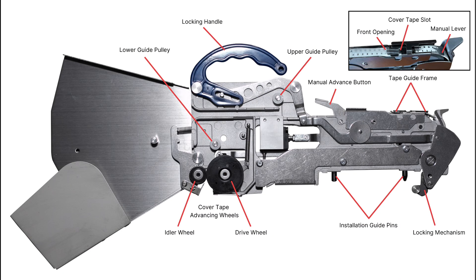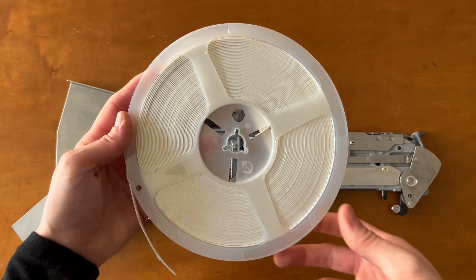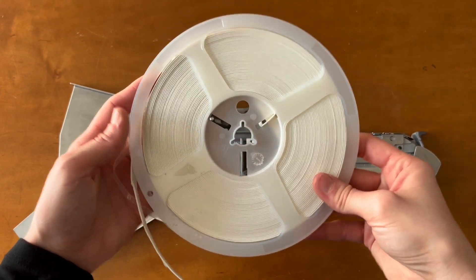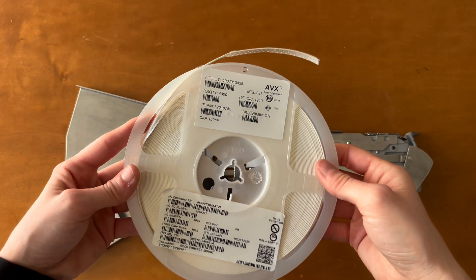Throughout this tutorial, I'll be referring to different parts of the feeder by name. This diagram can be used as a reference to understand what each part is called and where it's located. Now that you've confirmed your feeder size, determined the correct pitch, and labeled your feeder, go ahead and grab your tape reel and feeder and we'll go over each step.